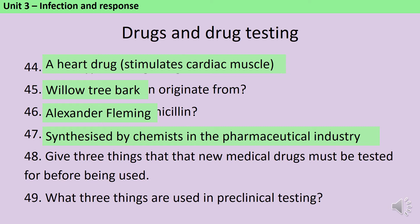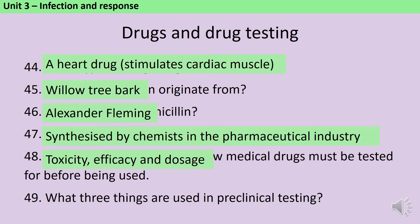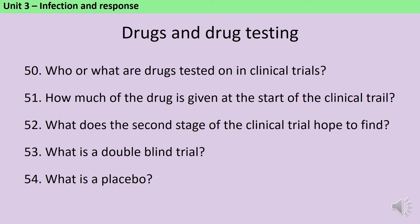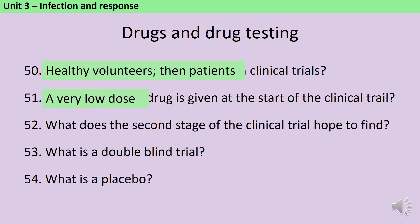Before a new medical drug can be used with patients it needs to be tested for toxicity — in other words does it have side effects — the efficacy, does it actually make the disease any better, and also for the dosage. In pre-clinical testing a new drug will be tested on cells, tissues and live animals. In the clinical trials we initially test the drug on healthy volunteers while looking for side effects, because we don't want to risk making someone who's sick even sicker. Once through that stage we move on to patients, starting with a very low dose and gradually increasing it if no side effects are found.